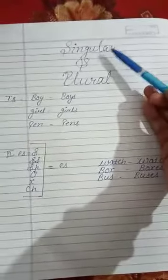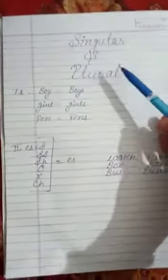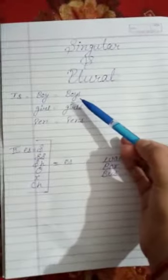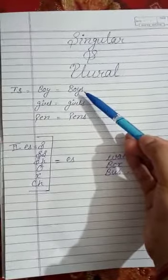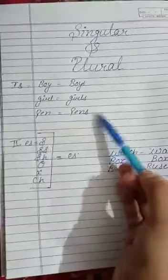Good morning students, today we will talk about singular and plural. Singular means one, plural means many. While changing from singular to plural, we generally add 's' at the end of the word, like boy-boys, girl-girls, pen-pens.